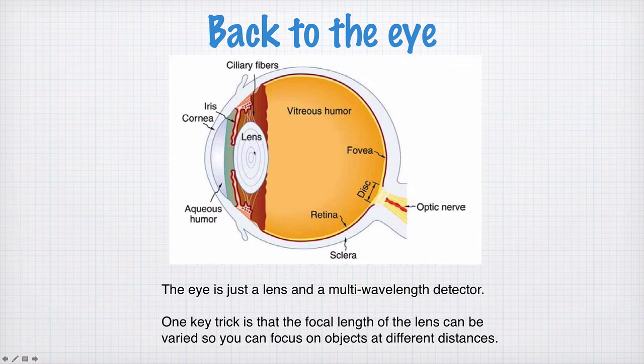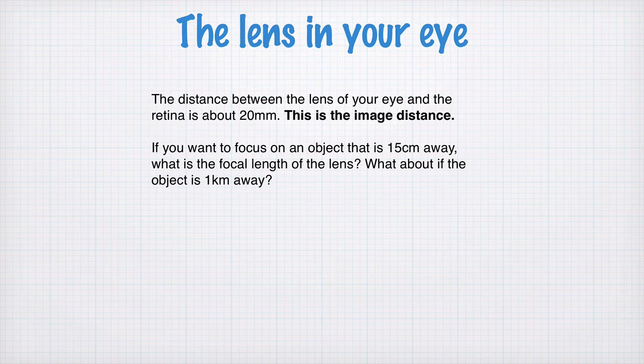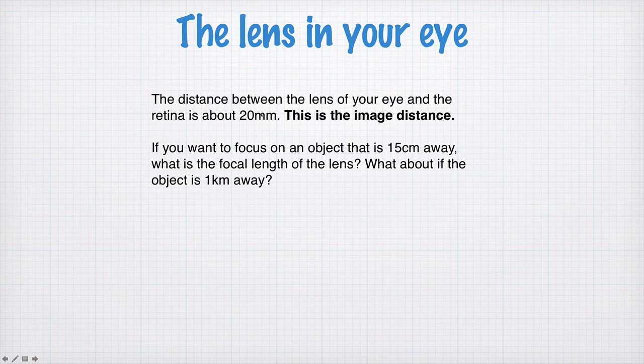The distance between the lens and the retina is about 20mm in a typical eye. Let's see what range of focal length you can achieve. This 20mm is the image distance, i, and it's fixed.